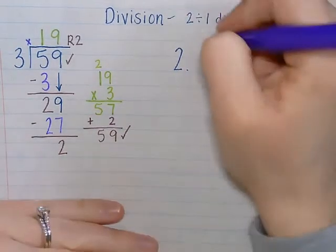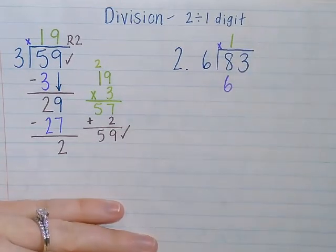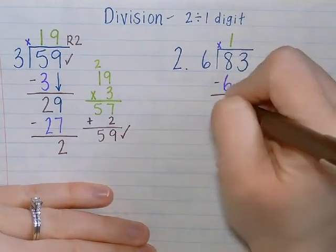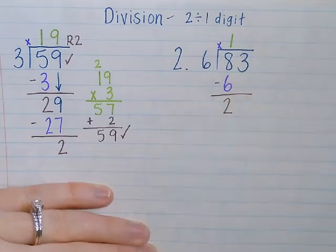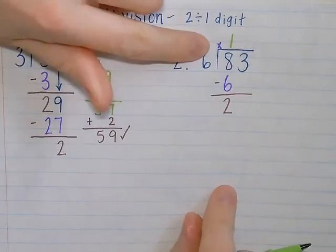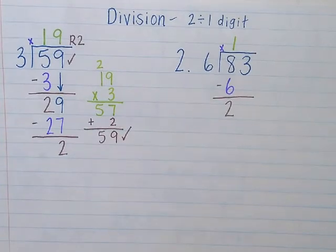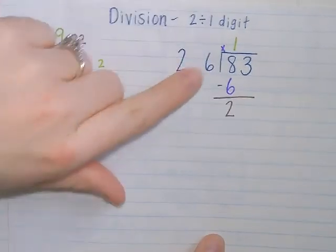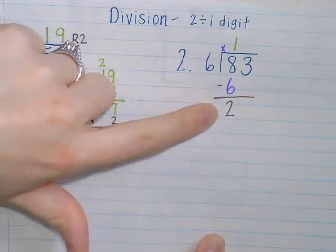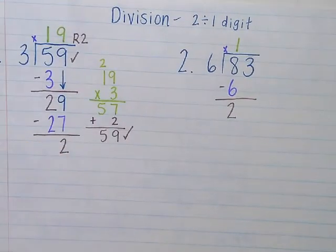My next step is to check my math. So I need to multiply six times one, which gives me six. Next, I need to subtract. Eight minus six gives me two. Great. Let me check my math before I move any further. Six times one is six, eight minus six is two. Perfect. Just like I did with the eight, I need to ask how many groups can I make out of 23? Two is less than six, so I know I cannot make any equal groups out of two or six, so I need to bring down the three.